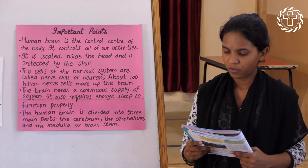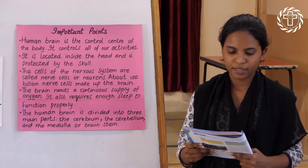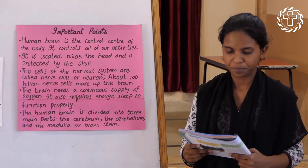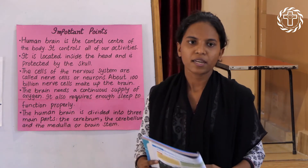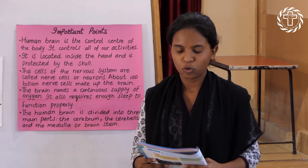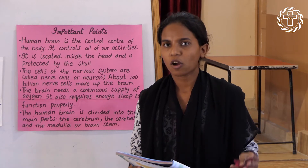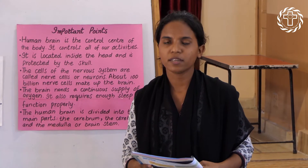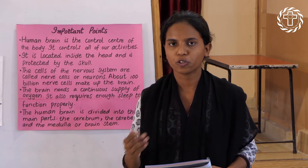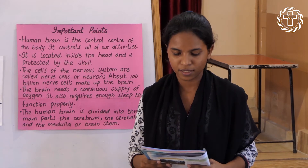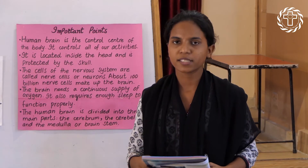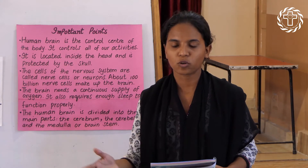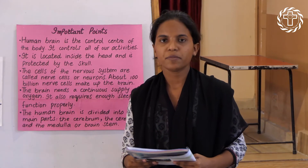Hamara brain trillions of cells se bana hua hai. Jo humara nervous system hai, us ke cells ko neurons ya nerve cells kehte hain. Aur ye saare nerve cells aapas mein linked hote hain — connect hote hain — humara brain.